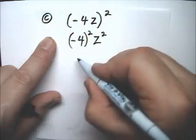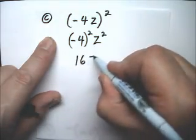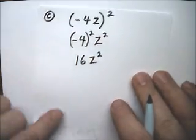Now, negative 4 times negative 4 is positive 16, so this is 16 z squared.